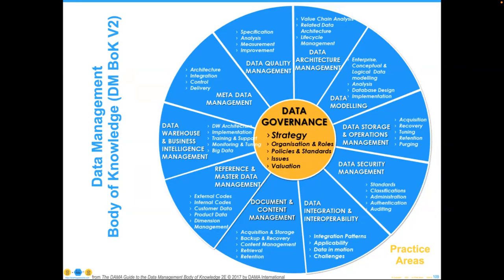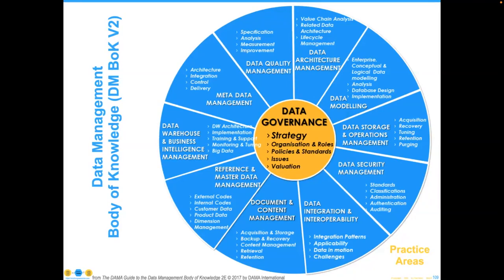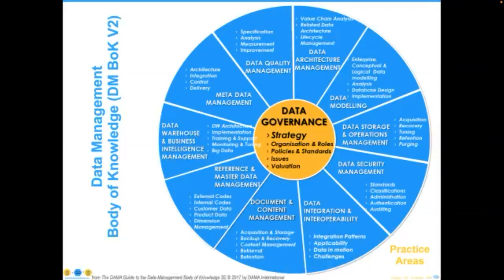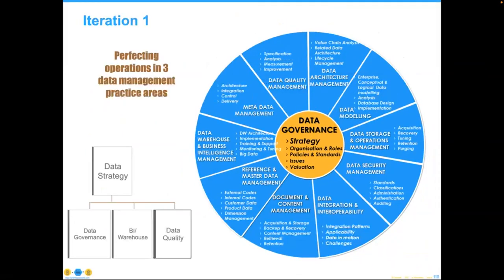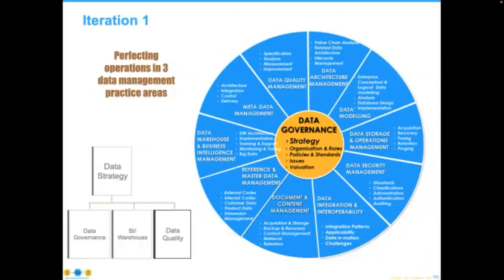The DMBOK doesn't tell you one piece is more important than another, although placing data governance at the center makes some judgment that it's a governing process. Most organizations will ask: which of the pie slices do I start with — thinking it's one to the exclusion of the others. In more likelihood, your strategic implementation will be better considered as perfecting operations in three data management practice areas — think of it like a three-legged stool, where you're trying to get structural soundness. The first iteration might be: let's do data warehousing, but also do data governance and data quality management.